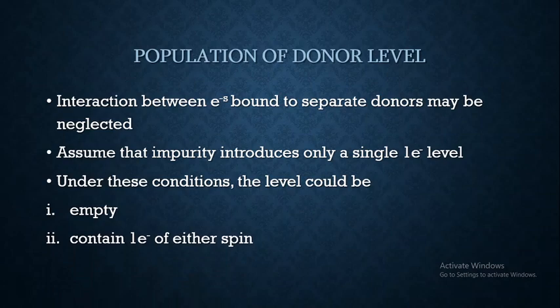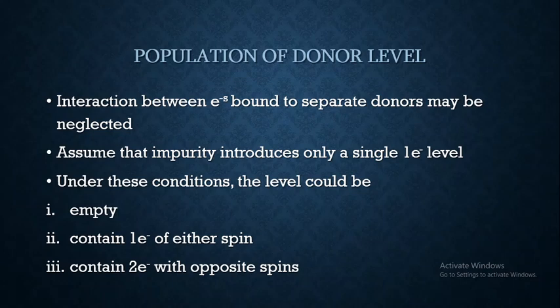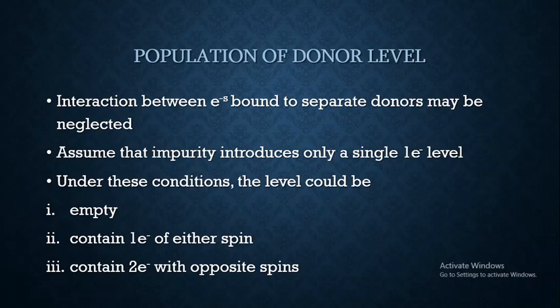Under these conditions, the level can be of three types: first, the level can be empty; second, the single electron level can contain one electron of either spin (+½ or −½); and third, the level can contain two electrons — one with +½ spin and one with −½ spin (opposite spins). However, double occupation is not favored due to the high energy arising from Coulomb repulsion between two localized electrons.